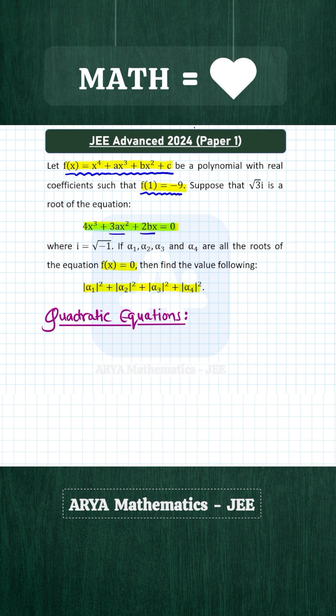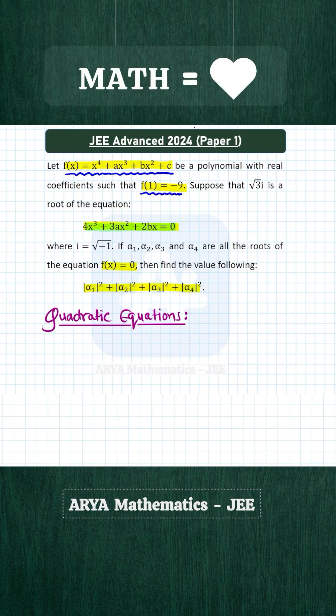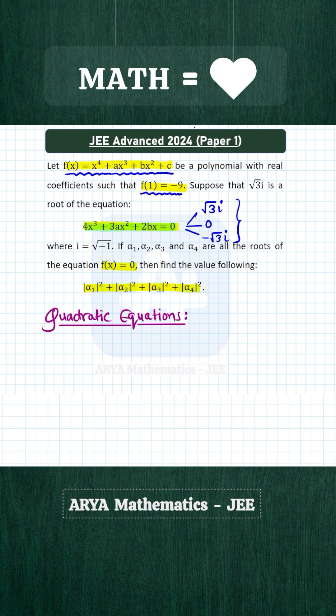If you notice the coefficients a and b, these are real numbers. So if one of the roots of this cubic equation in x is √3i, then -√3i is also a root of this cubic, because the complex conjugate of √3i will be -√3i. Therefore, these are the three roots of this cubic equation in x.